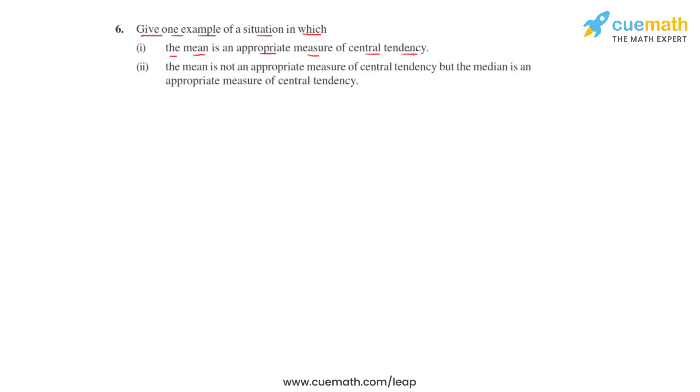Mean is an appropriate measure of central tendency in all cases where it is important to take all the observations into account or into consideration and the data does not have any extreme values, because extreme values in a data affect the mean and this is one of the weaknesses of the mean. So if the data has a few points which are very far from most of the other points, then mean is not a good representative of data.